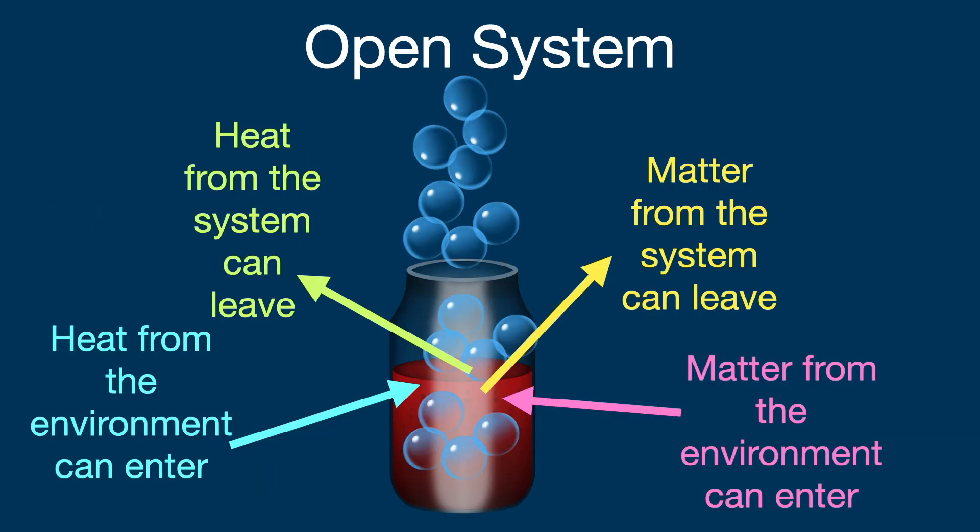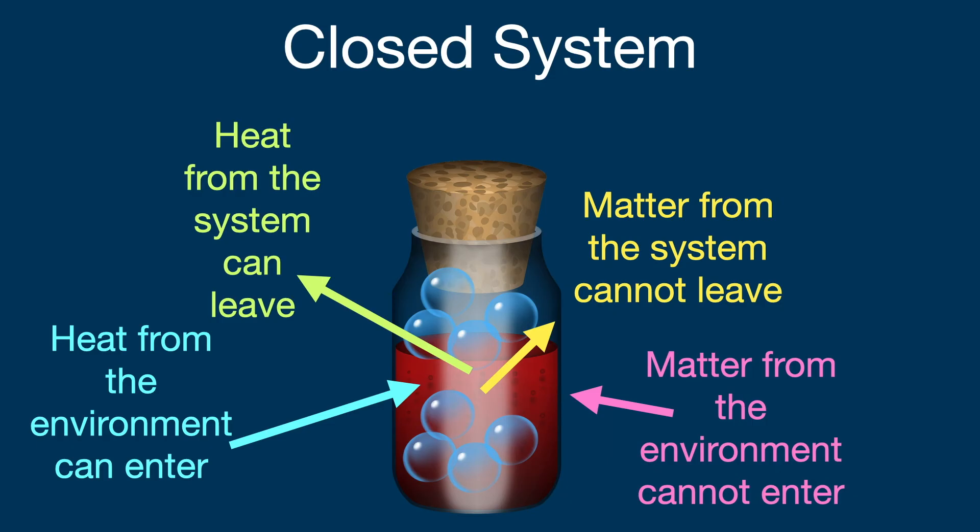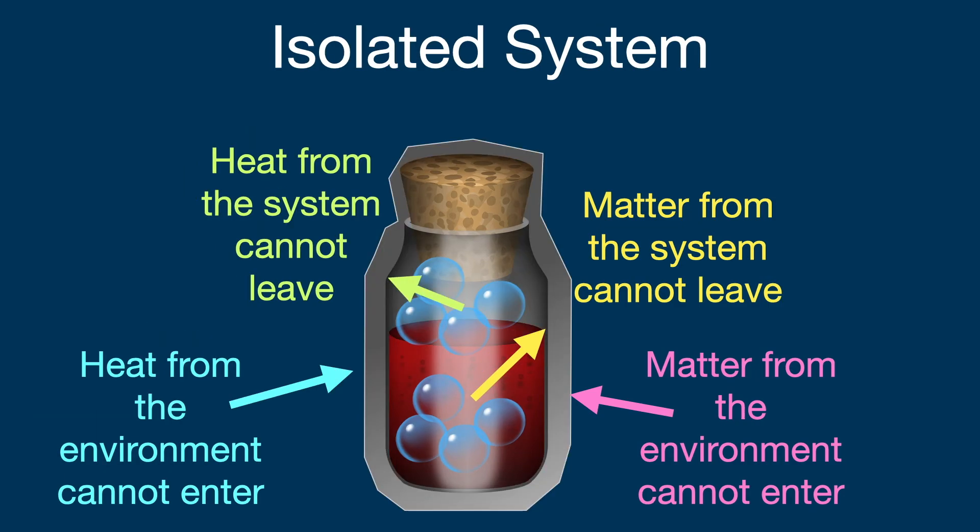So in an open system, heat and matter can both enter and leave the system. In a closed system, heat can enter and leave the system, but matter cannot, matter stays inside the system and matter cannot enter it. In an isolated system, heat cannot enter or leave the system, and matter cannot enter or leave the system.